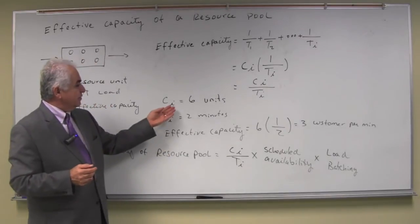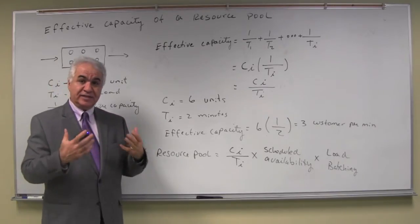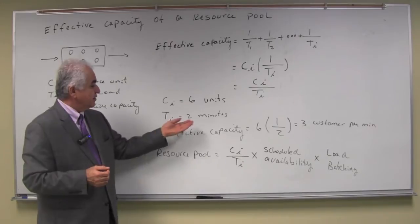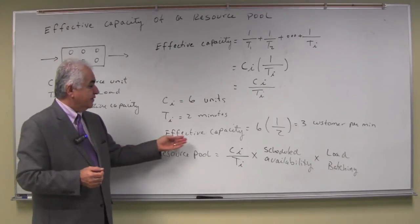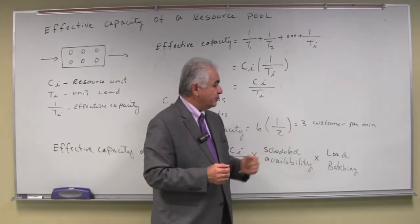For example, if we have 6 units, C sub i is 6, the resource pool has 6 units, then the average time per customer, T sub i is 2 minutes, then effective capacity is 6 times 1 over 2 or 3 customers per minute.